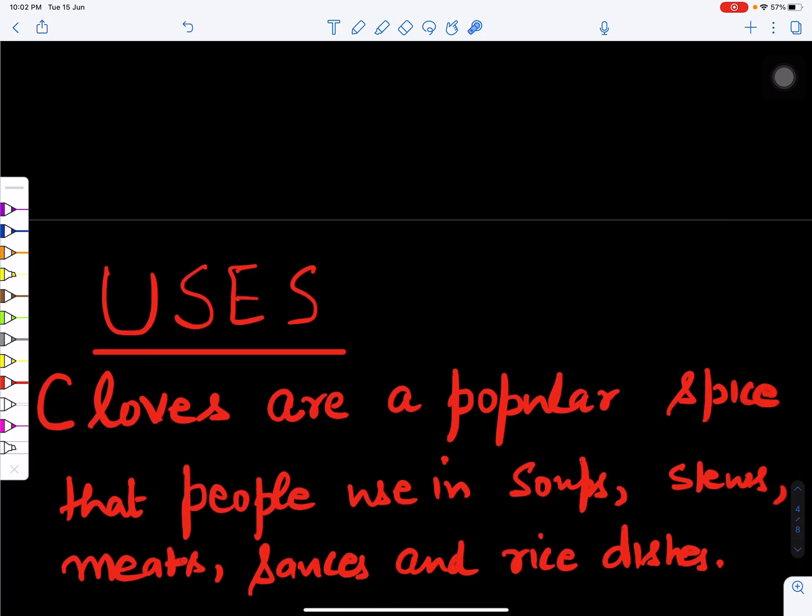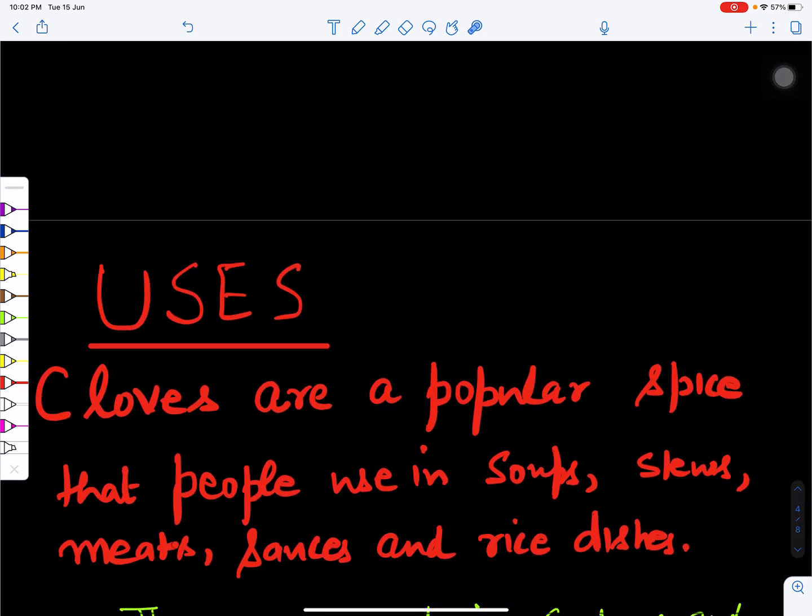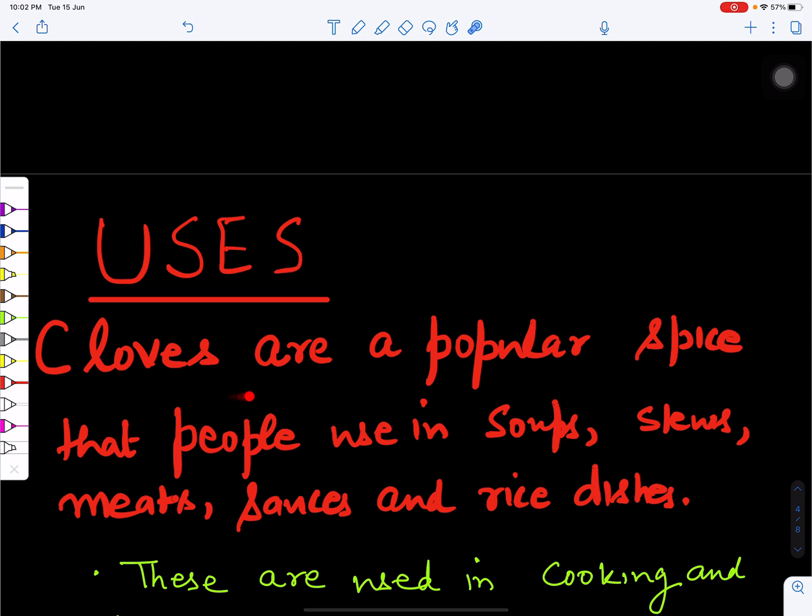Now what are the uses of the clove? As we discussed, cloves are used as a popular spice. This is used for flavoring soups, stews, meats, sauces, various kinds of sauces, ketchups and rice dishes. If we talk about rice dishes, it can be sweetened rice, it can be salty rice, it can be pulao, it can be biryani.